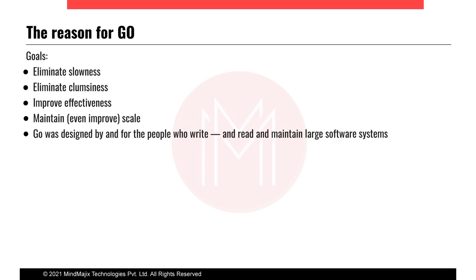The main reason Go was introduced in Google's environment is to eliminate the clumsiness of code. They don't want clumsy code — it has to be easy to improvise existing code, maintain it, and scale to the benchmarks they have set.